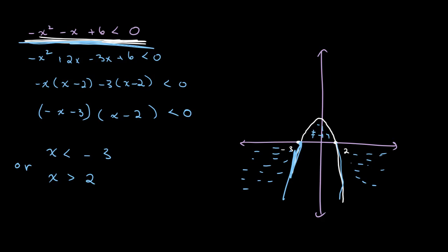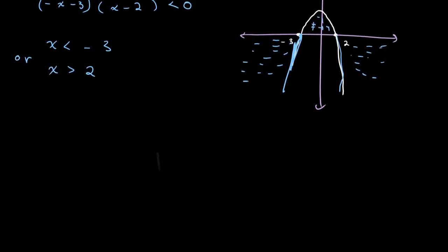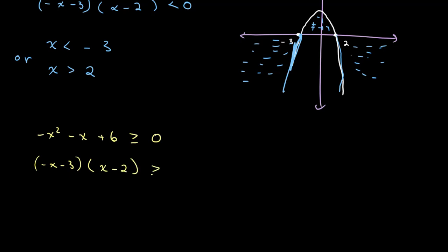Now let's look at one more example using the same equation. We have minus x squared minus x plus 6, but in this case it is greater than or equal to 0. We already factorized this above: minus (x minus 3) times (x minus 2) is greater than or equal to 0.